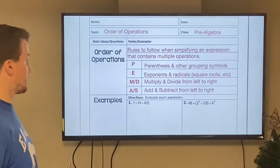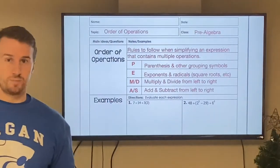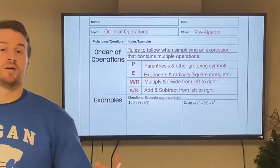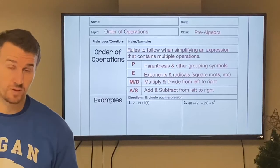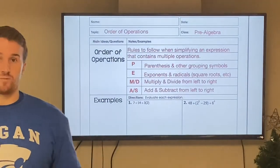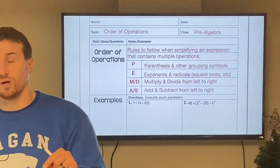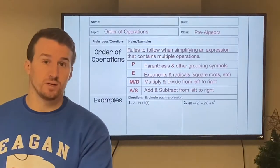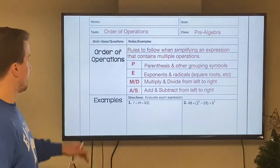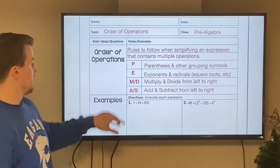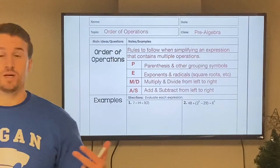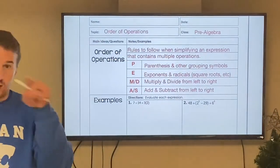P stands for parentheses and other grouping symbols — that includes braces, brackets, absolute value that we just learned about with integers, and anything grouped together. For example, if it says (5 + 2) times 5, you have to do 5 + 2 inside the parentheses first before you multiply by 5. The next step is E, which stands for exponents and radicals, including square roots and cube roots — anything with the radical sign that looks like a check mark with a line over the number.